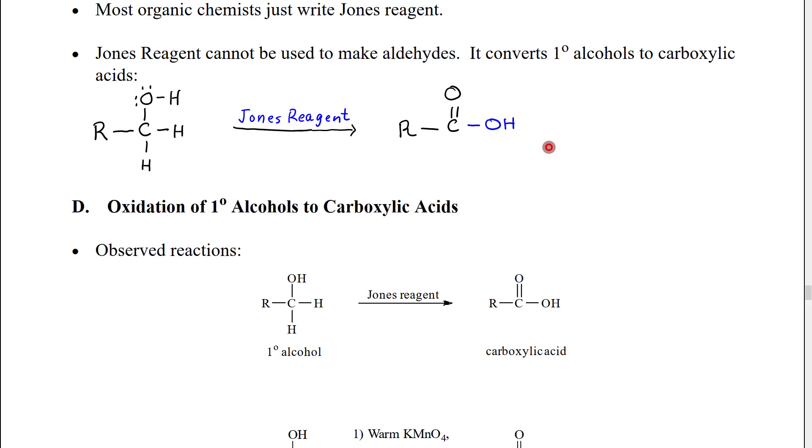So therefore we can use the Jones reagent in fact we're going to in the next section to make carboxylic acids and that's a great way to make carboxylic acids but it's a terrible way to make aldehydes. Instead we want to use PCC.